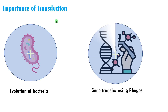We can use this capacity of phages to introduce a gene of interest into bacteria, using bacteriophages in gene transfer. This is one of the most efficient gene transfer methods, as a genetically modified phage infects bacteria just like a natural infection and can transfer the desired gene.